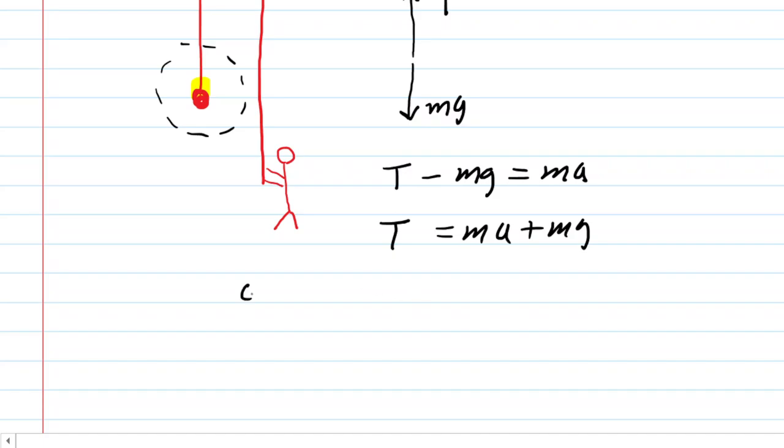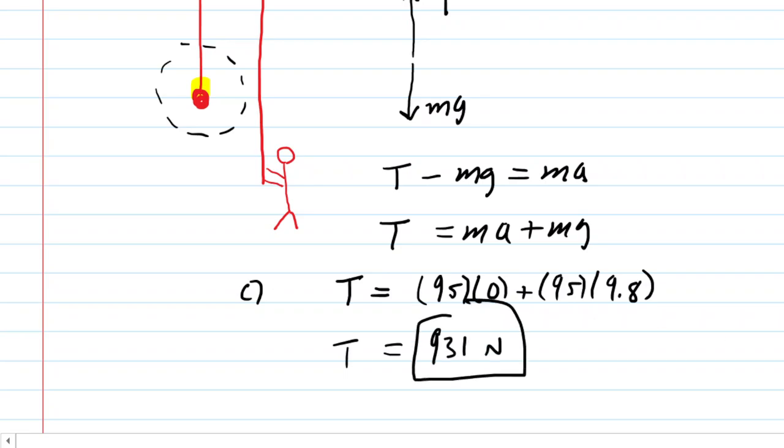Let's go ahead and for part C, remember that the man in the chair is traveling at constant velocity. So that means the acceleration is zero. So we'll have the mass, 95 kilograms times zero, and then plus 95 kilograms times 9.8. Let's go ahead and punch this into our calculators. And we get exactly 931 newtons. So this is the correct answer to part C.